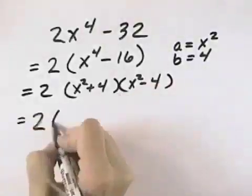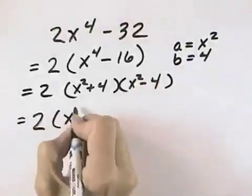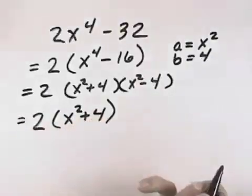Our first factor's 2. x squared plus 4 is the sum of squares, and we don't have a rule for that, so that cannot be factored any further.